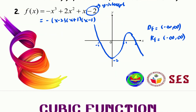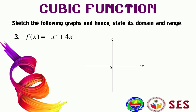Question three: f(x) = -x³ + 4x. This looks a little tricky, but when we analyze it, we don't have an x² term and there is no constant 'd', so the y-intercept is at (0, 0). Factorizing: take out negative x first, giving -x(x² - 4).